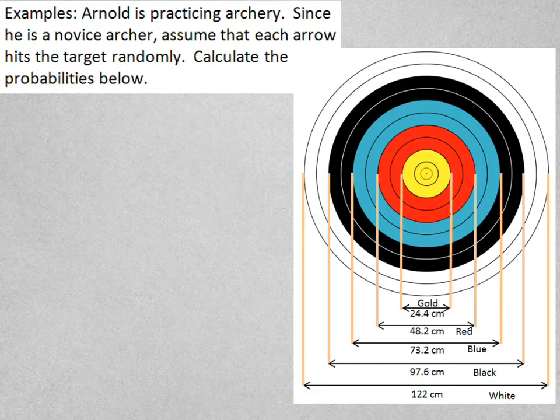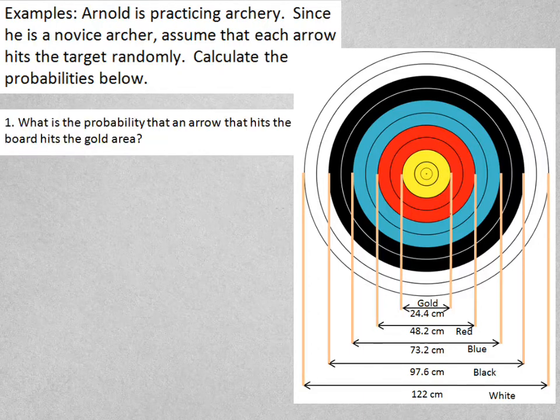So for our first one, let's find the probability that an arrow that hits the board hits the gold area. In other words, I'm finding the probability that a random point that I pick on the target is inside the gold rings.